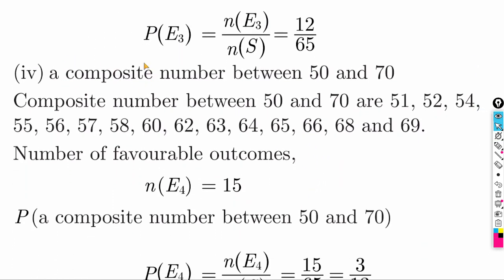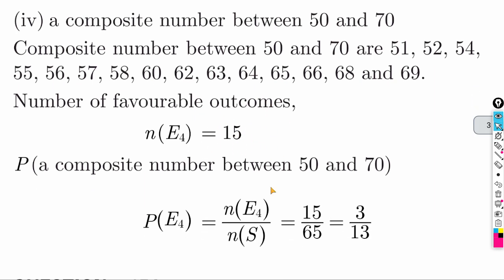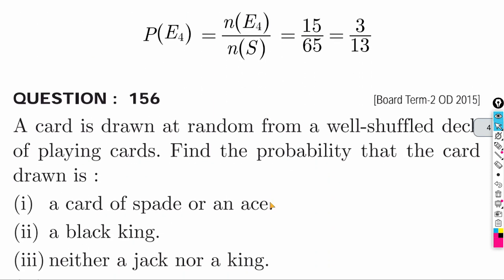Find probability of a composite number. Leaving out prime numbers, all remaining numbers are composite. Counting from the range, the number of favorable outcomes is 15. Probability = 15 by 65.